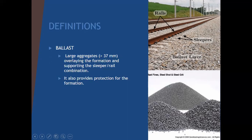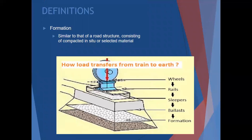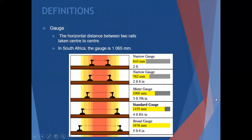The ballast is large aggregates overlying the formation and supporting the sleeper/rail combination. It also provides protection for the formation - the formation is whatever is under here - so the ballast protects the layers below and keeps the rail upright. Formation is similar to a road structure and consists of compacting in-situ or selected materials. Formation layers include your sub-base, sub-grade, and all that.